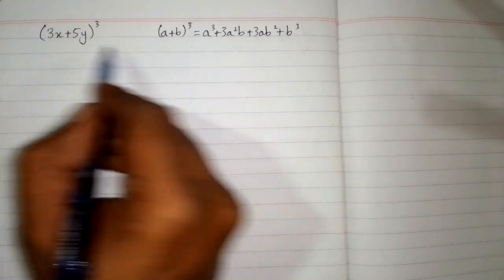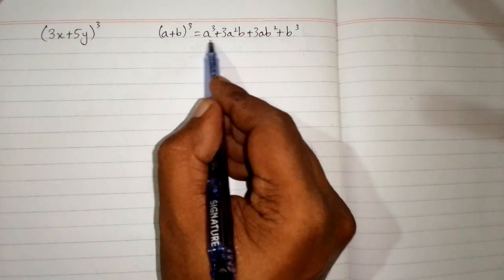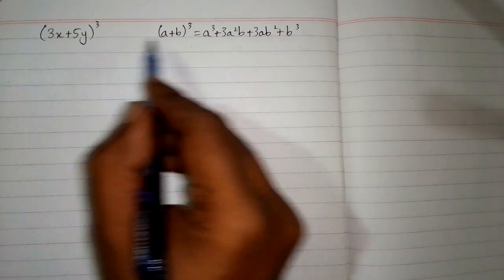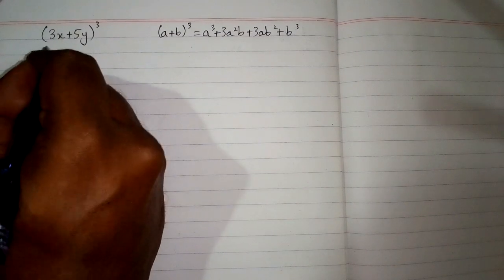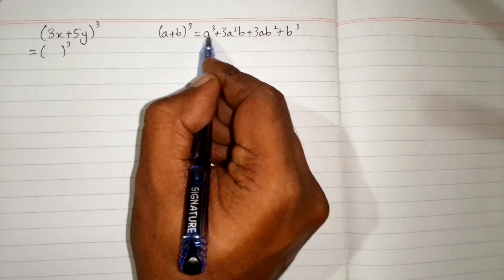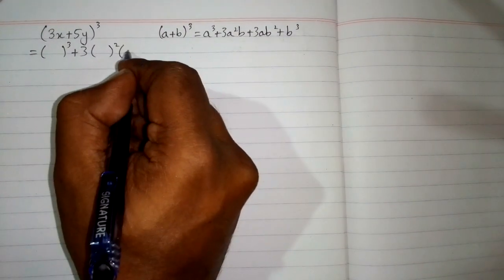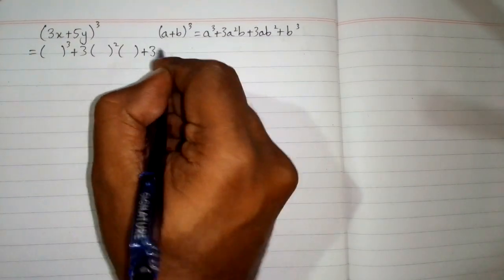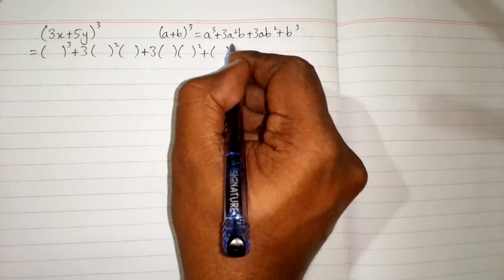We can see that we have 3x in place of a and 5y in place of b. We will put 3x in the places of a and 5y in the respective places of b. First we will make the structure of the formula, putting brackets in place of a: a cube plus 3a squared b plus 3ab squared plus b cube.